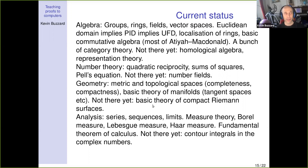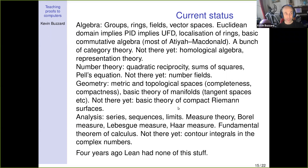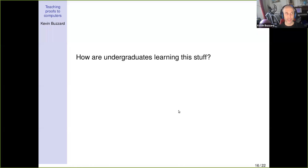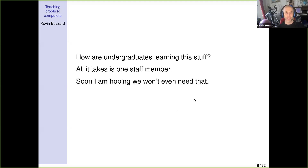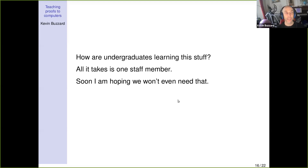The progress is fast — this is just a snapshot. Every time I give this talk I have to add something new: Haar measure is only about a month old. Four years ago there was nothing. How are undergraduates learning this? I run a club — it takes one enthusiastic staff member at a university to get ten undergraduates interested, and once you've got ten, they start teaching each other. Books are appearing; I'm writing an instructional textbook for mathematicians called 'Mathematics in Lean.'